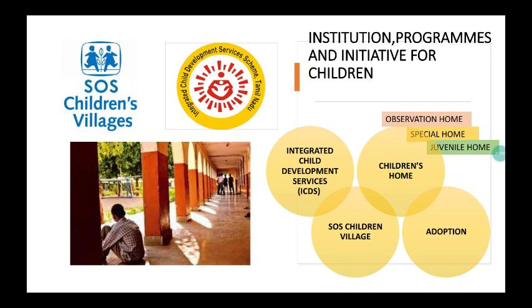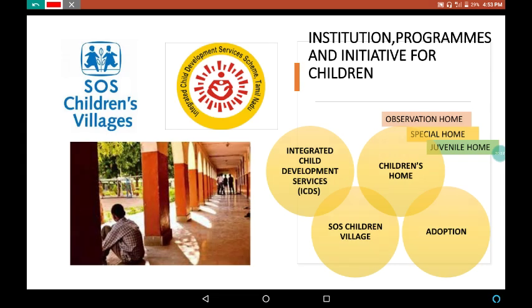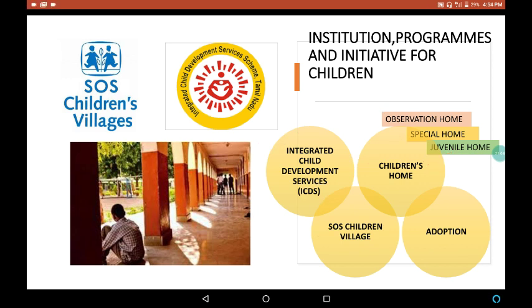There are some institutions, programs and initiatives for children. These include Integrated Child Development Services (ICDS), SOS Children Village, Children Homes — which has three types: observation home, special home and juvenile home — and adoption.